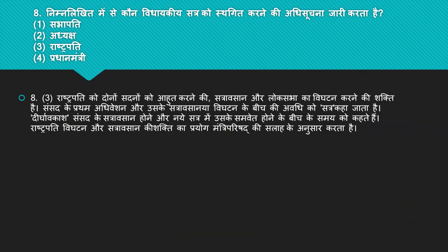Aagla question hai: nimlikhit mein se kaun vidhayi satr ko stagit karne ki adhisuchana jaari karta hai? 4 options hain: Sabhapati, Adhyaksh, Rashtrapati, Pradhan Mantri. Right answer hai number 3 — Rashtrapati. Rashtrapati ko donon sadanon ka adhiweshan aamantrit karne, satr stagan karne aur Lok Sabha ka vighatan karne ki shakti hai. Sansad ke pratham adhiveshan aur unke stagan ke beech ki avadhi ko 'satr' kaha jata hai. Rashtrapati vighatan aur stagan ki shakti ka prayog Mantri Parishad ki salah ke anusar karta hai.